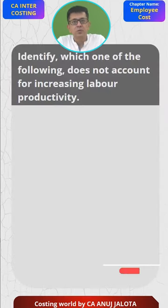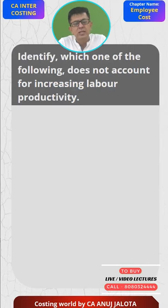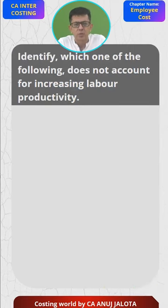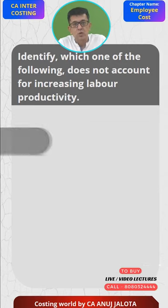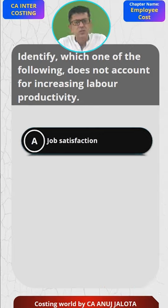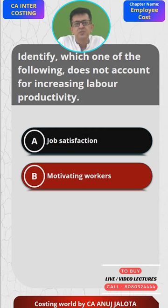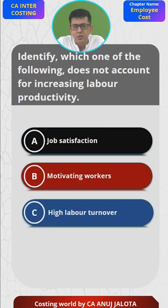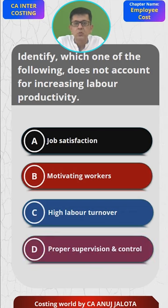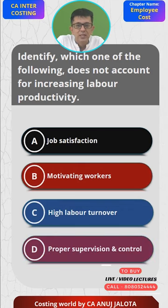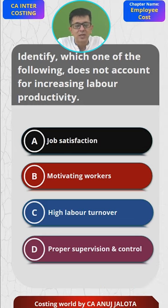Let's start. Identify which of the following does not account for increasing labor productivity — labor productivity means labor efficiency. Option A: job satisfaction. Option B: motivating the workers. Option C: high labor turnover. Option D: proper supervision and control. Think out of the four which makes maximum sense — even if you haven't done this chapter, this is an obvious answer, so comment below after pausing the video.